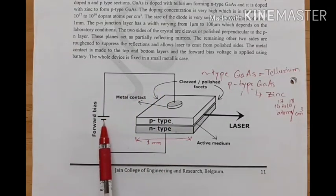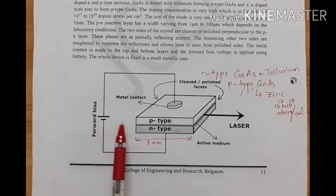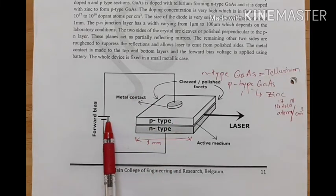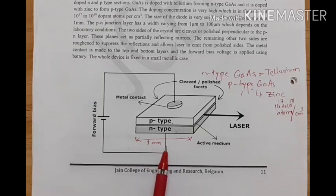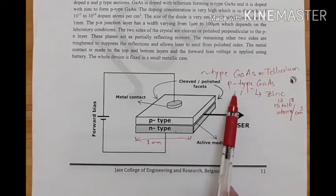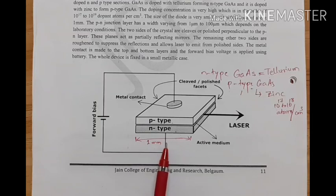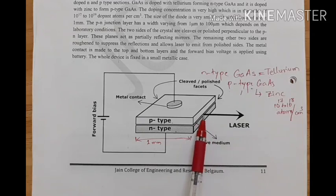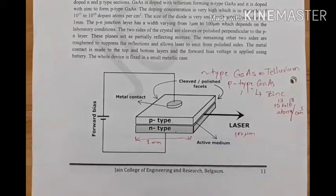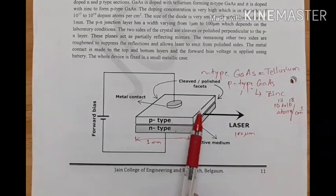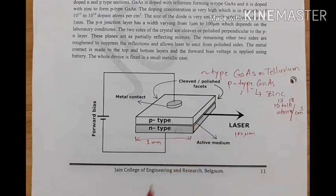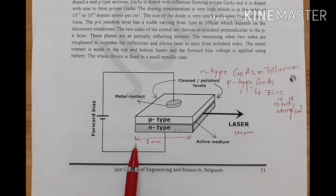The bias here is forward bias — p-type is connected to the positive side of the battery and n-type to the negative side. The active medium in this case is the p-n junction or gallium arsenide itself. When we apply voltage, the laser comes out from the junction, and that junction size is around 100 micrometers. This entire setup is fitted in a small metallic case.